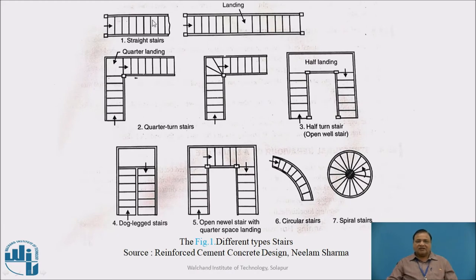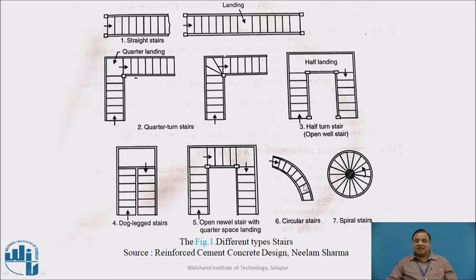This is a straight stair. In a straight stair, if the number of steps are more than 15, then we go for a mid-landing. Next, this is a quarter-turn stair with winders. This is an open-well stair with half landing, this is an open-well stair with a quarter landing, and this is the dog-legged stair which we are going to discuss today. This is a circular stair and this is a spiral stair, which is usually used for water tanks.